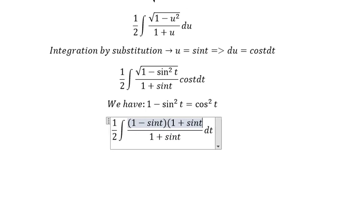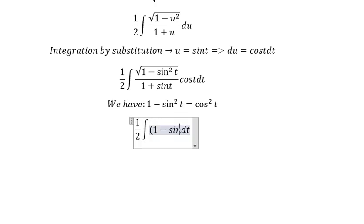with 1 plus sin t. Move 1 plus sin t, divide 1 plus sin t, you will get 1 minus sin t. And now we can get the final answer.